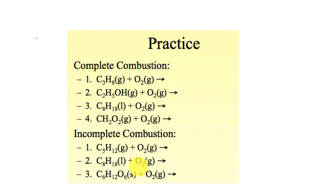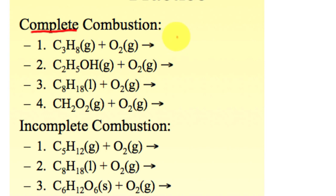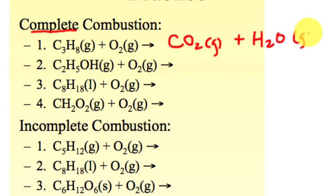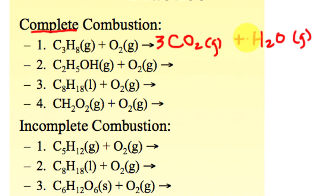For complete combustion, the products are carbon dioxide gas (CO2) and water (H2O) gas. Then we balance it. I have three carbons, so I put a 3 in front of CO2. Hydrogen is eight, so I need a 4 in front of H2O to make eight. For oxygen: six from CO2 and four from H2O gives ten total, so I put a 5 in front of O2. That's your balanced complete combustion reaction.